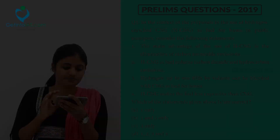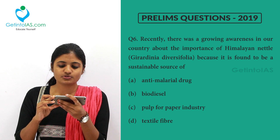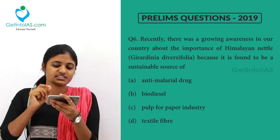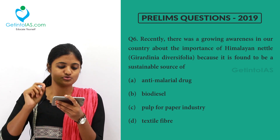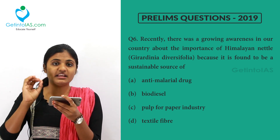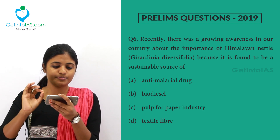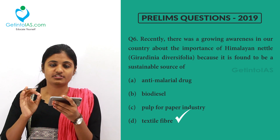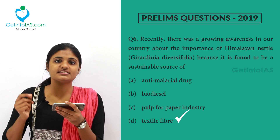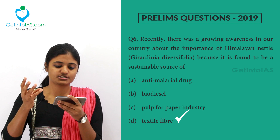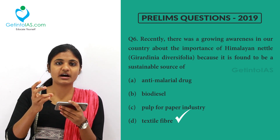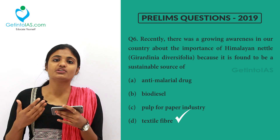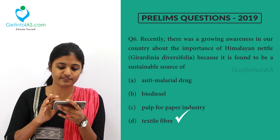So B is the correct answer. Next question: there is growing awareness in India about the importance of Himalayan nettle because it is found to be a sustainable source of — anti-malarial drug, biodiesel, pulp for paper industry, or textile fiber. The correct answer is textile fiber. This tree is found in Uttarakhand, Himachal Pradesh, and Jammu and Kashmir in the north, and it is mainly used for making shawls and suits.